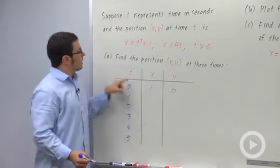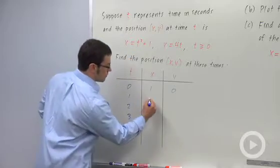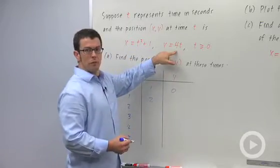At t equals 1, I get 1 squared plus 1 for x, which is 2, and 4 times 1 for y, which is 4.